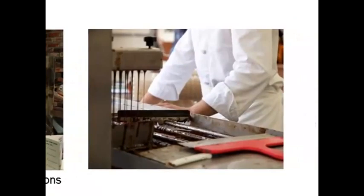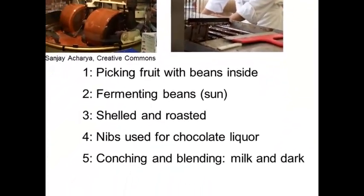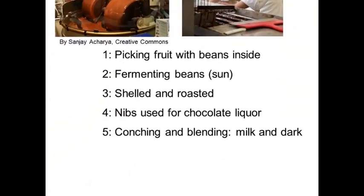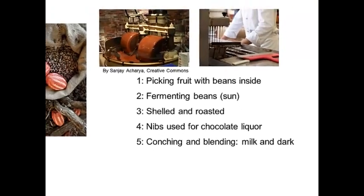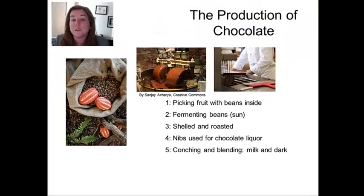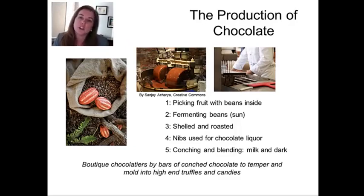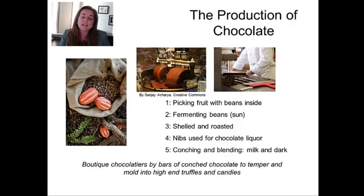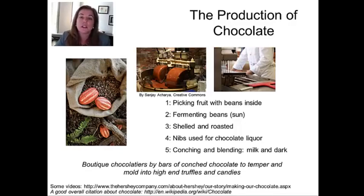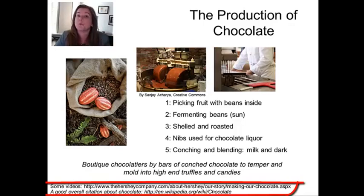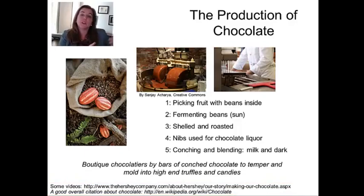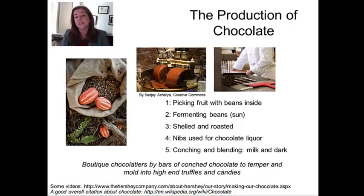The chocolatier actually gets something different — he gets a bar of chocolate. To summarize: you pick the fruit, ferment it, shell and roast it, and take the nibs to make chocolate liqueur. Somebody selling chocolate in a city like Houston is going to be buying big bars of conched chocolate — chocolate that's already been mixed with milk and sugar and gone through the full process. Nobody roasts their own cocoa beans on a small scale. This conched chocolate is the raw product that chocolatiers fashion into whatever chocolates they're making, and they can buy those bars in large quantities from a variety of different sources.